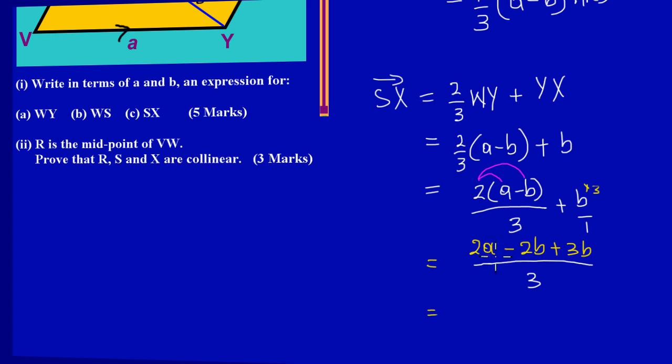By simplification, grouping my like terms, I have 2a minus 2b plus 3b. So that's the same as saying 3b minus 2b, and 3b minus 2b leaves us with positive b, plus b. We put this over 3 as our denominator.